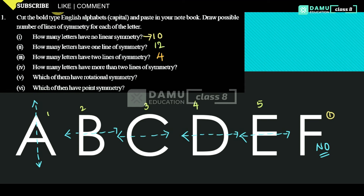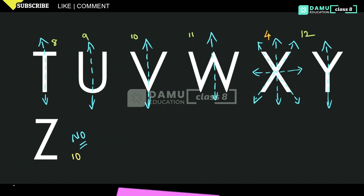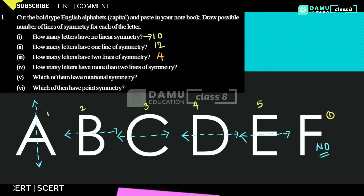Next: how many letters have more than two lines of symmetry? That is X and O — only two letters have more than two lines of symmetry.